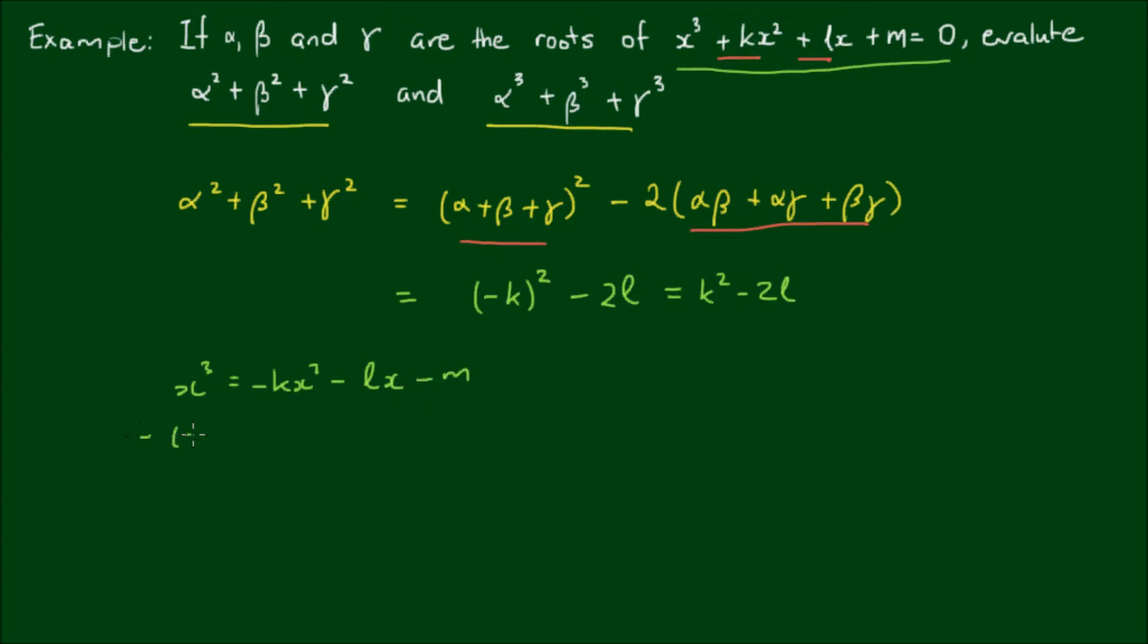Let's rearrange the equation so that we have x³ is equal to negative kx² minus Lx minus m. Now when x equals α, we say α³ is equal to minus kα² minus Lα minus m. And of course when x equals β, we have β³ is equal to negative kβ² minus Lβ minus m.